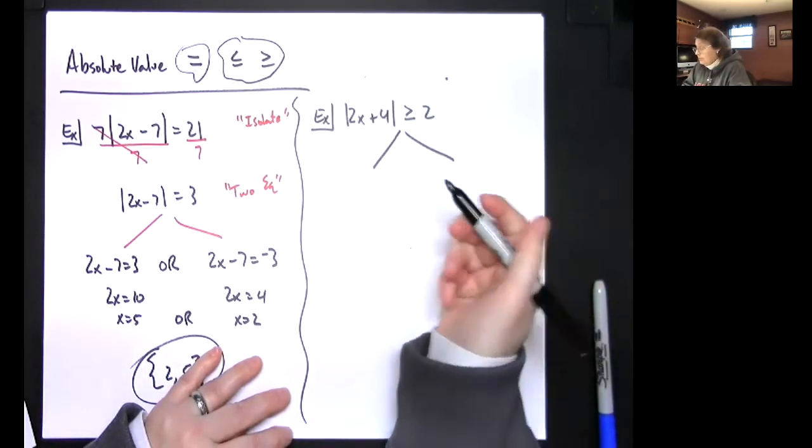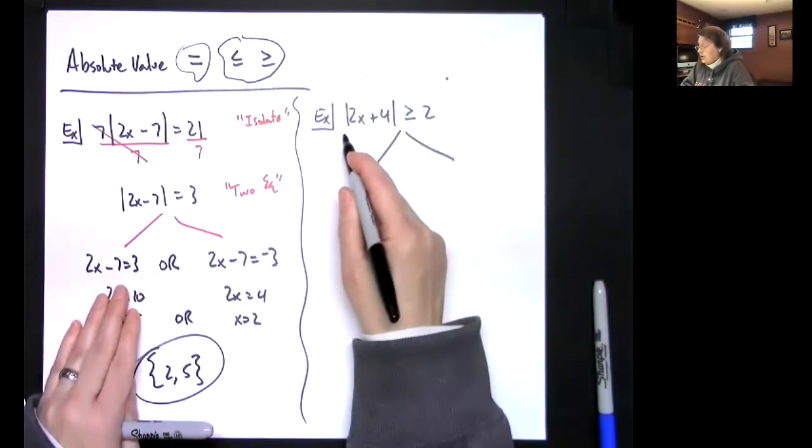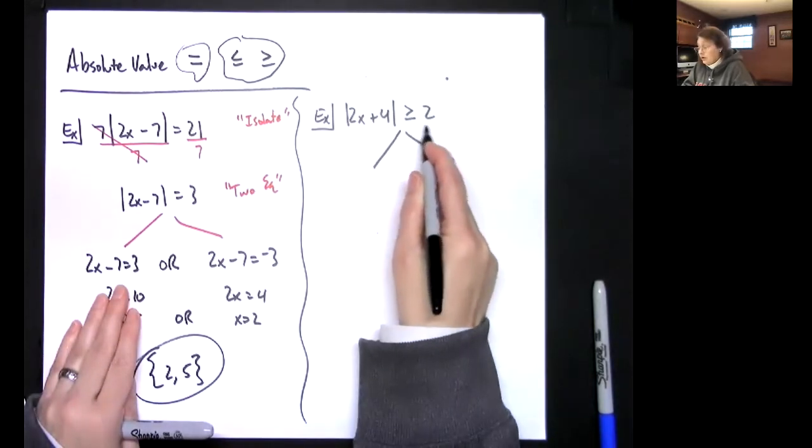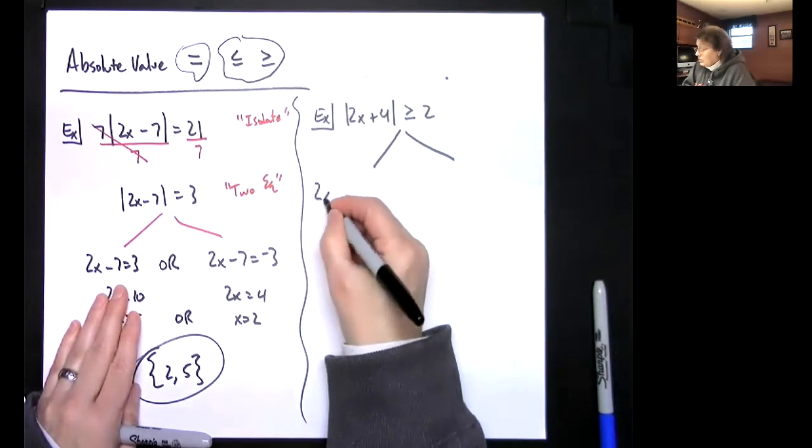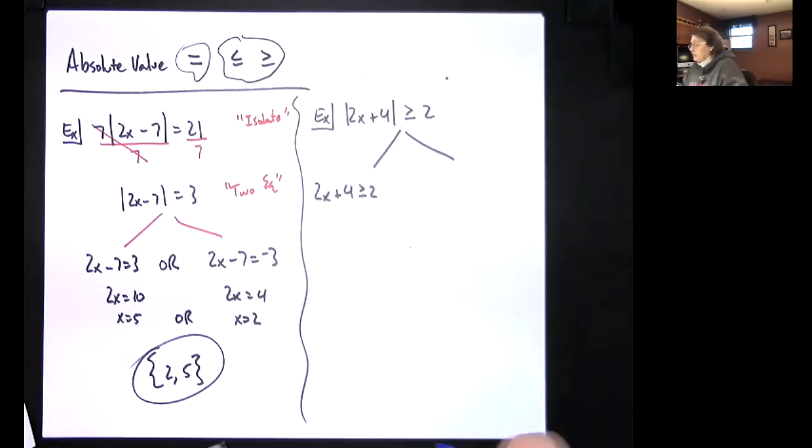The first one you're going to do just like you did the first one over here. You're going to drop those absolute value bars and you're going to leave everything the same, so this is going to be 2x plus 4 greater than or equal to 2.